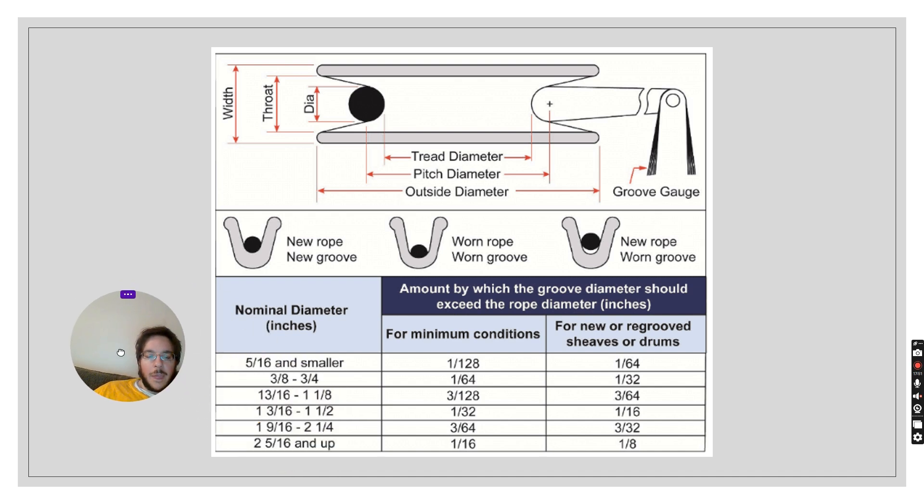Now if we look here, here's a sheave and we can use a gauge to figure out the groove of the sheave. There's three things that we want to see. The first is the tread diameter which is the width of the sheave. Then the second thing is the pitch diameter which is from the center point of the rope to the center point of the rope. Obviously we have the outside diameter. On the vertical width we can see the width is the width of the sheave and then the throat size is the internal width of the sheave and the diameter is the diameter of the rope that's in the sheave.